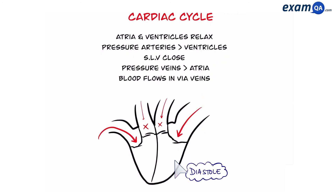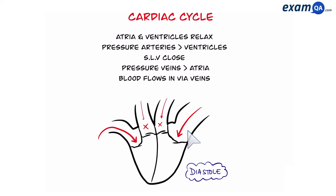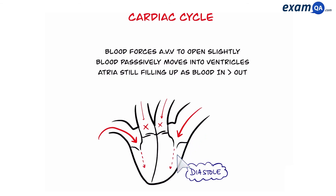The next phase is diastole. Now the atria and ventricles are relaxed. This means the pressure in the arteries is greater than the pressure of the ventricles, so the semilunar valves will close. Also, the pressure in the veins is greater than the pressure of the atria, which draws blood into the heart via the veins. As blood flows into the heart, this forces the atrioventricular valves to open, and blood moves passively from the atria into the ventricles. However, the amount of blood coming into the atria is still greater than the amount leaving passively, so the atria begin to fill up.